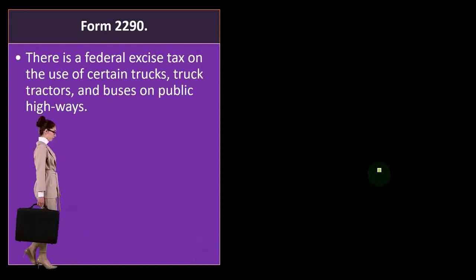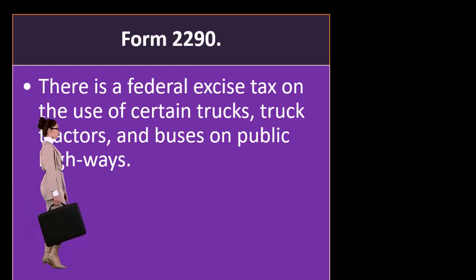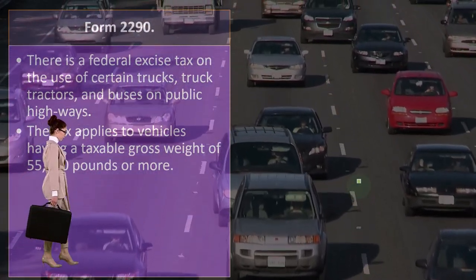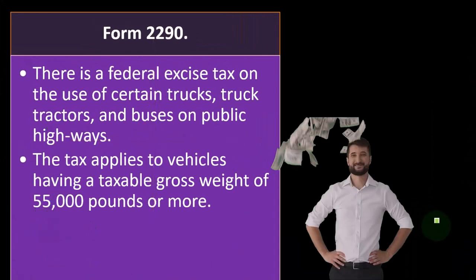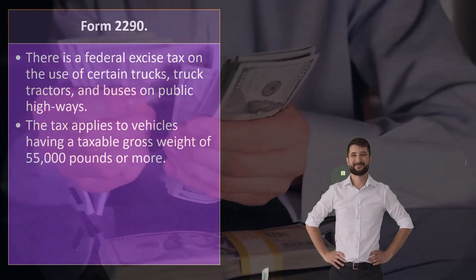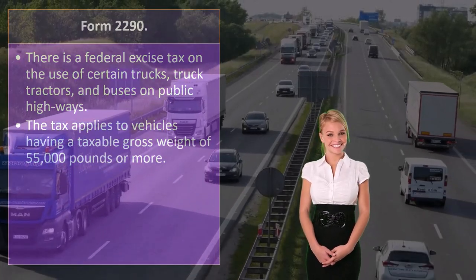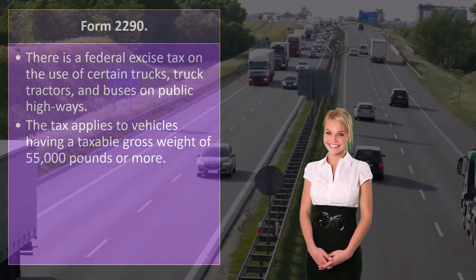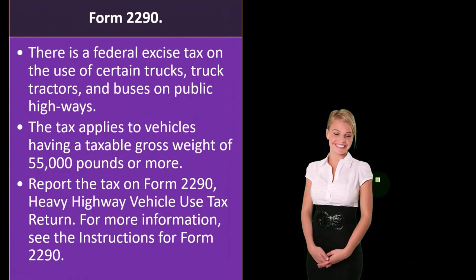There is a federal excise tax on the use of certain trucks, truck tractors, and buses on public highways, reported on Form 2290. A business using the highway all the time is using a public good — built with tax dollars — to make money. So it makes sense to tax heavy vehicles for the maintenance of the highway, since they benefit more from it than others. The tax applies to vehicles having a taxable gross weight of 55,000 pounds or more, reported on Form 2290, Heavy Highway Vehicle Use Tax Return.